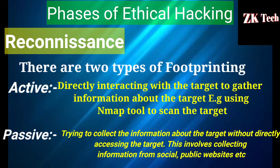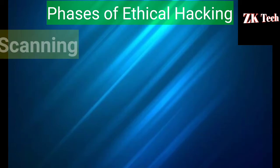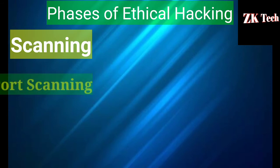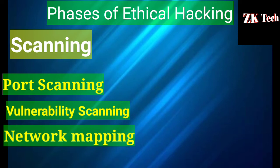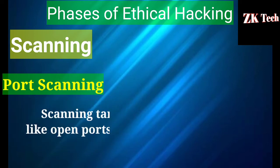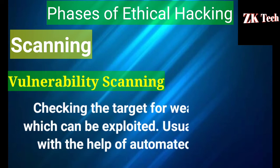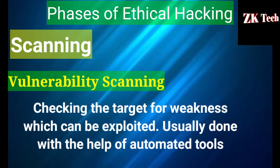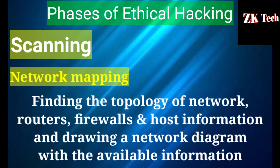The second phase of ethical hacking is scanning. There are three types of scanning: port scanning, vulnerability scanning, and network mapping. Port scanning means scanning the target for information like open ports, live systems, and various services running on the host. Vulnerability scanning means checking the target for weaknesses that can be exploited, usually done with the help of automated tools. Network mapping means finding the topology of the network — routers, firewalls, and host information — and drawing a network diagram with the available information.